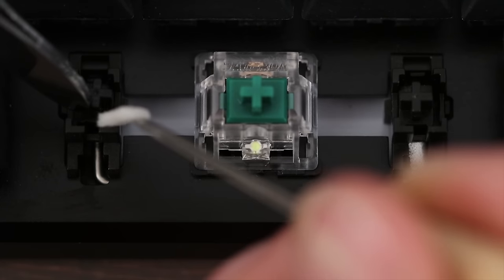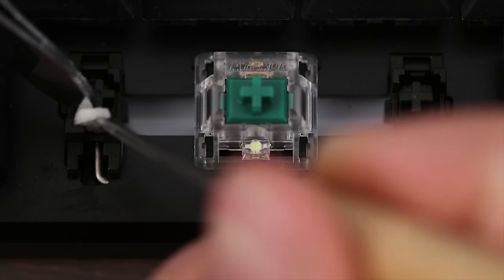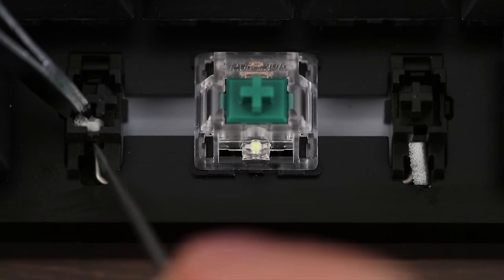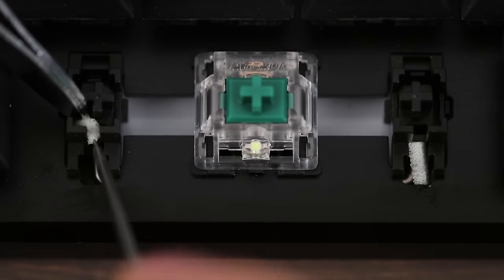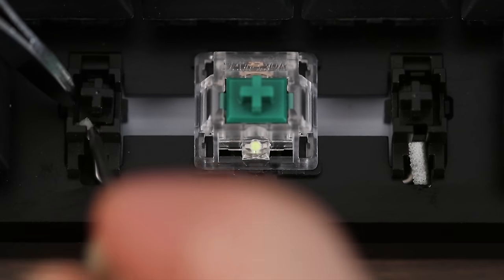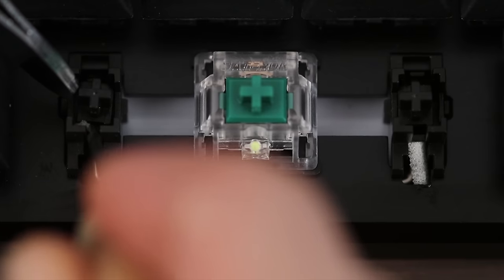So you put these two little squares of sponges underneath the stabilizer wire as best you can. Now when you put the keycap on and you begin typing you might find that they like to pop out. So just keep trying to wedge it underneath there with a needle or a pointy.